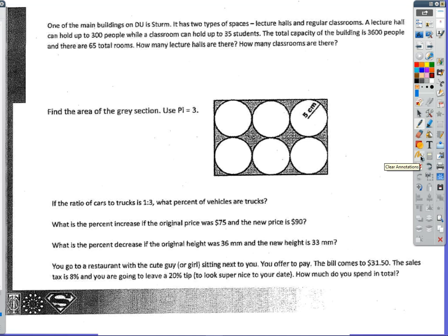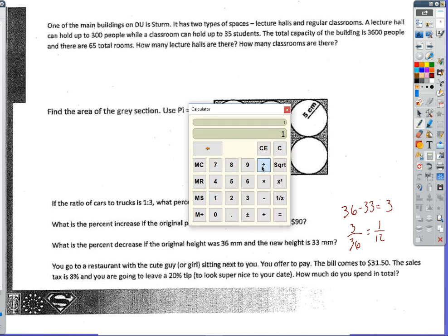What is the percent decrease if the original height was 36 millimeters and the new height is 33? Same basic idea, right? So we have 36, that's our start. We're ending up at 33, so that is a difference of 3. So what percent is 3 of 36? As a fraction, we're going to get 1 twelfth. And 1 twelfth is going to be an 8.3 percent decrease.